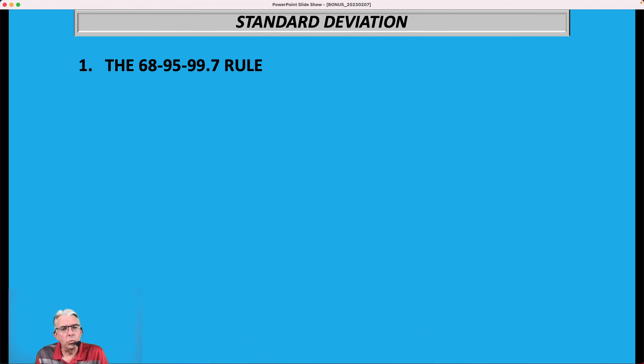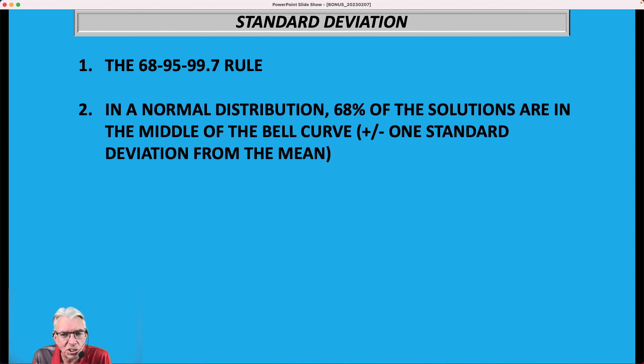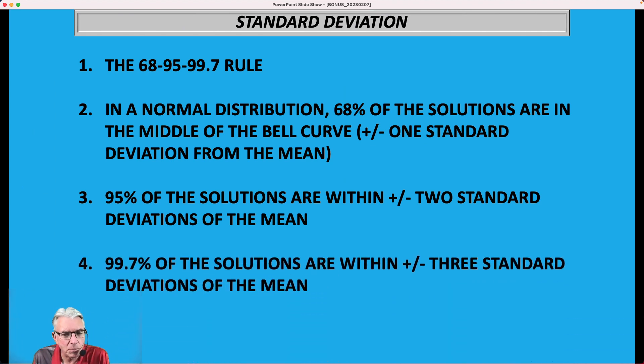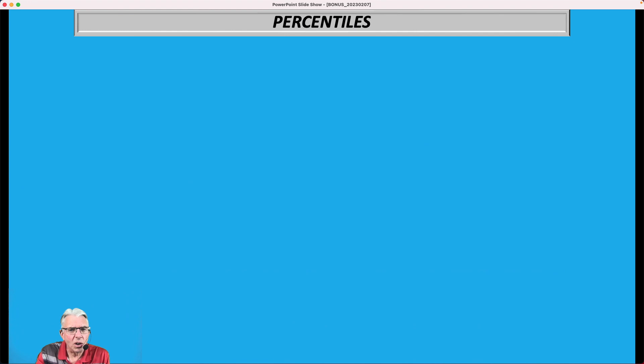Now, standard deviation itself, there's a rule called the 68-95-99.7 rule. Now in a normal distribution, 68 percent of the solutions are in the middle of the bell curve, plus or minus one standard deviation from the mean. 95 percent of the solutions are within plus or minus two standard deviations of the mean, and 99.7 percent of the solutions are within plus or minus three standard deviations of the mean. And the more variance you have in your data, then the larger these standard deviations are going to be.